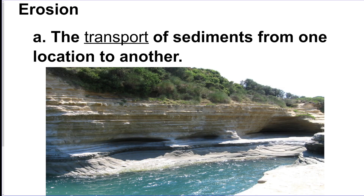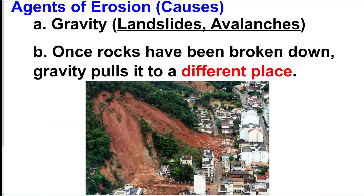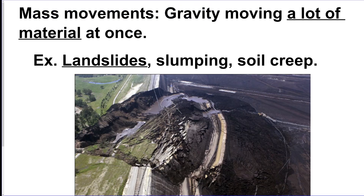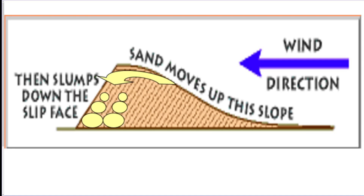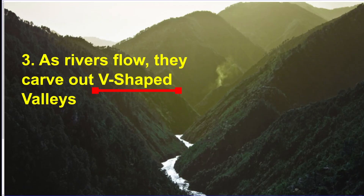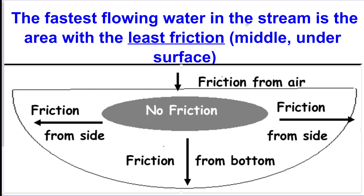Erosion is the transport of sediments from one location to another. Landslides and avalanches are caused by gravity — these are called mass movements. Wind is mostly the agent of erosion in arid areas with little vegetation. Sand dunes: the gradual side faces the incoming wind, and the steep side is where the wind deposits material. Rivers carve V-shaped valleys — remember, the letter V is in the word 'river.' In a straight river, the fastest-flowing water is in the center where there's least friction, away from the banks.